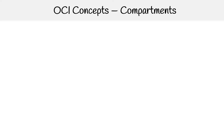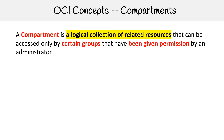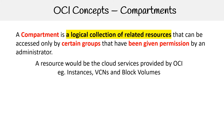Let's take a look at the OCI concept of compartments. A compartment is a logical collection of related resources that can be accessed only by certain groups that have been given permission by an administrator. A resource would be a cloud service — that could be an instance, VCN, or block volume — so the majority of cloud services in OCI.